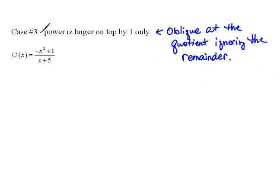For the other case, the last case, the power would be larger on top. In this instance, we always have an oblique asymptote at the quotient, or whenever we divide and we ignore the remainder. So let's go through and do this and we'll see how that works.